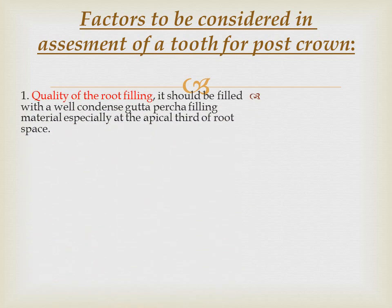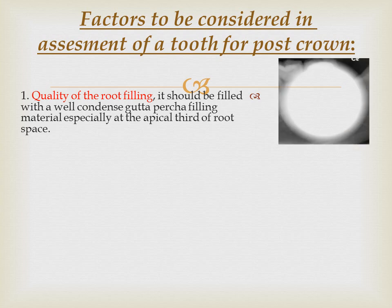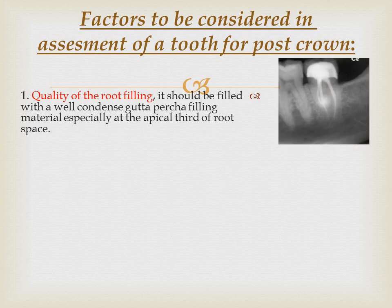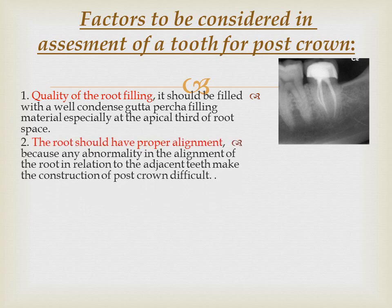Factors to be considered in assessment of a tooth for post crown: the first factor is the quality of root filling — it should be well condensed gutta-percha, especially at the apical third of the root space. The root should also have proper alignment, because any abnormality in the root alignment relative to adjacent teeth makes construction of the post crown difficult.